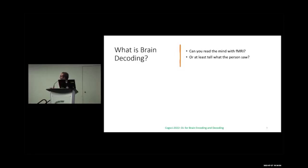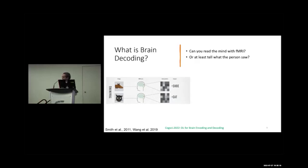We can at least get the brain activations when a subject is involved in a certain activity. Most early decoding work mainly focused on telling what the person saw. For example, showing a cat image gives a certain voxel activity pattern, and a dog image gives a different voxel pattern.